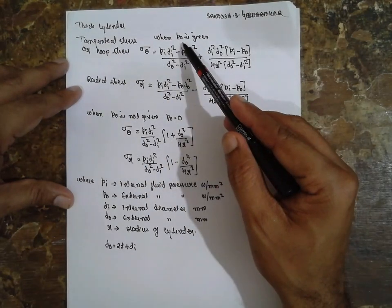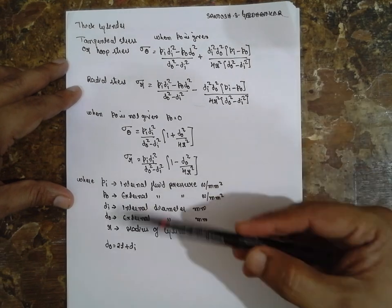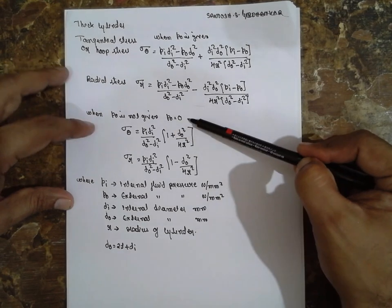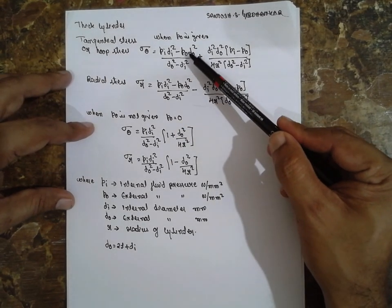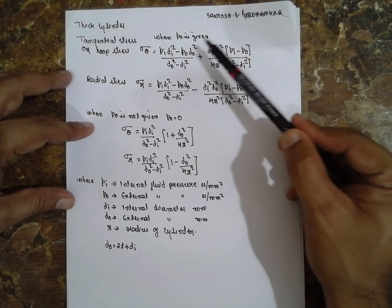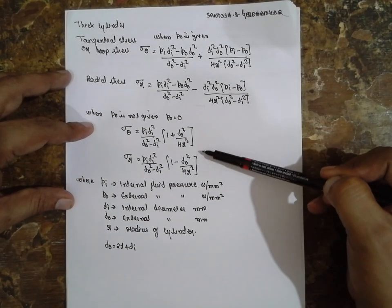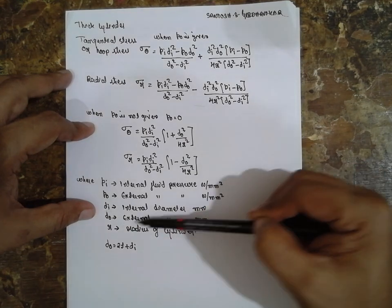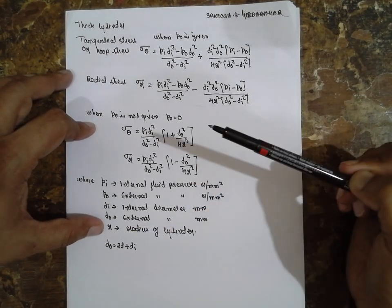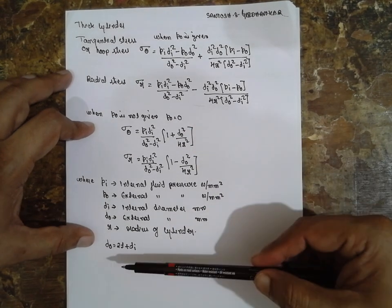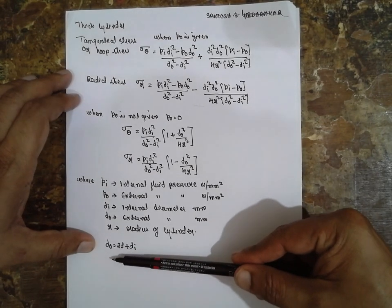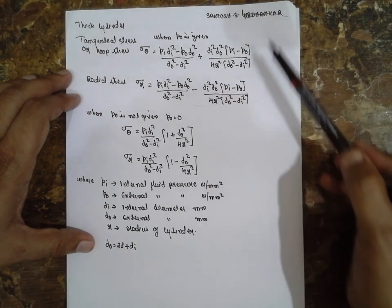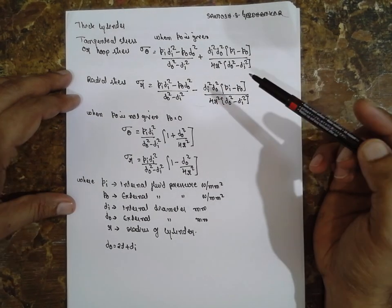When P0 is given — P0 is nothing but external fluid pressure. If P0 is not given, then you have to substitute 0 here, and you will arrive at this formula. Pi is nothing but internal pressure. Di is internal diameter, D0 is external diameter, R is the radius of the cylinder. And this is the formula for finding the outer diameter: D0 is nothing but 2t plus Di. By using this, we are going to solve the problems very fast.